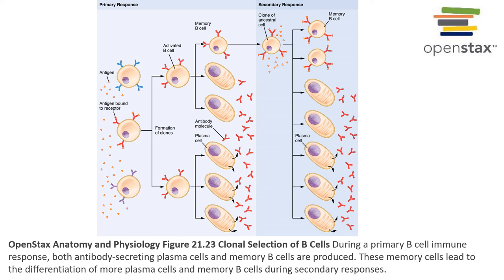Plasma cells are also produced that will secrete antibodies. These antibodies are not really needed to protect against the vaccine during the primary response, but the individual is then protected so that if they're exposed to the pathogen in the future, they will have a secondary response involving the memory B cells recognizing the antigen of that pathogen and rapidly producing plasma cells that can secrete antibodies.